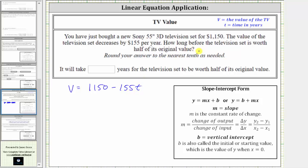Now to determine how long before the television set is worth half of its original value, we need to set the value of V equal to half of the original value and then solve for T. Half of the original value is going to be half of 1,150 or 1,150 divided by two. So let's replace V with 1,150 divided by two and then solve for T.